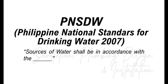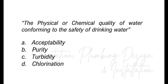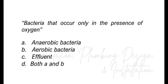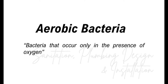The physical or chemical quality of water conforming to the safety of drinking water — is it A, acceptability; B, purity; C, turbidity; D, chlorination? The answer is acceptability. Acceptability is the physical or chemical quality of water conforming to the safety of drinking water. Bacteria that occurs only in the presence of oxygen — A, anaerobic bacteria; B, aerobic bacteria; C, effluent; D, both A and B? The answer is aerobic bacteria.